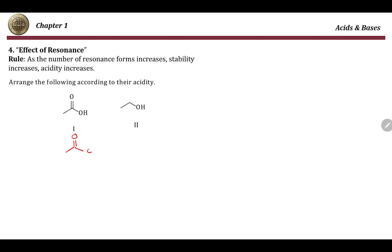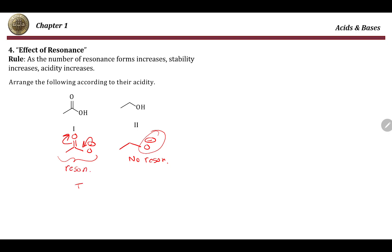We know that carboxylic acids are more acidic than alcohols, but why? If we draw the conjugate base of the carboxylic acid and the conjugate base of the alcohol, none of the previous rules directly explain the difference. However, looking carefully, the carboxylate anion can resonate — the negative charge is distributed over two oxygens — whereas the alkoxide anion has no resonance and the negative charge is concentrated on one oxygen. That is why compound one is a more stable anion and is more acidic than compound two.